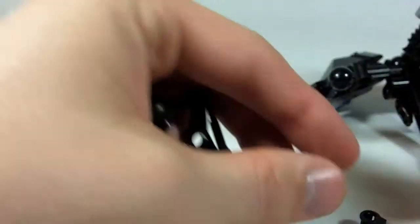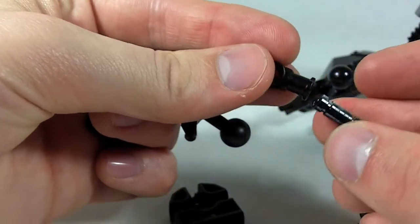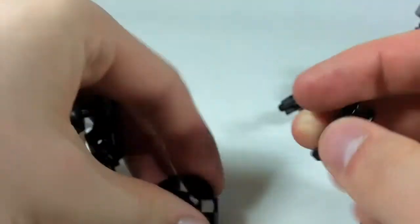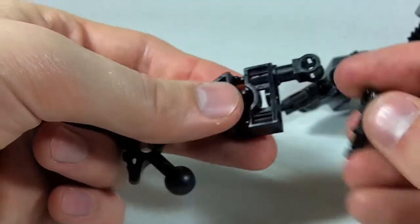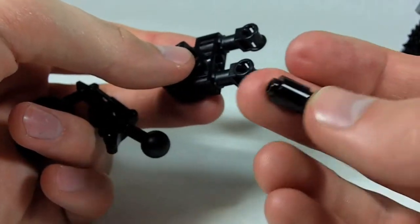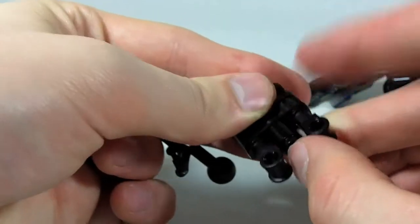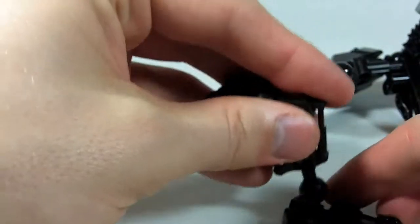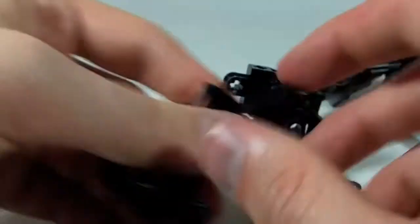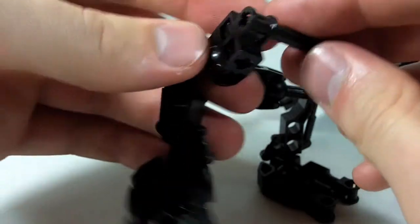So we've got this axle 90 degree connector with a two long axle. Two of those. And in the middle we're just going to stick a regular Lego cylinder. There. And then stick that on. The other foot is going to be the same but reversed.